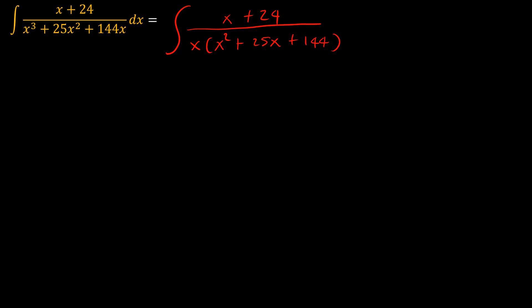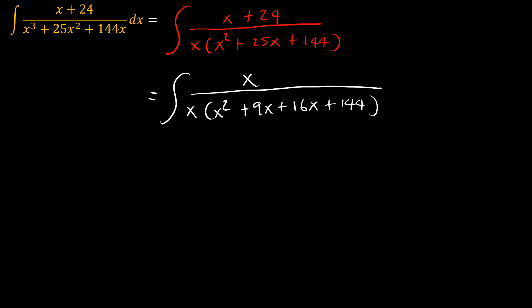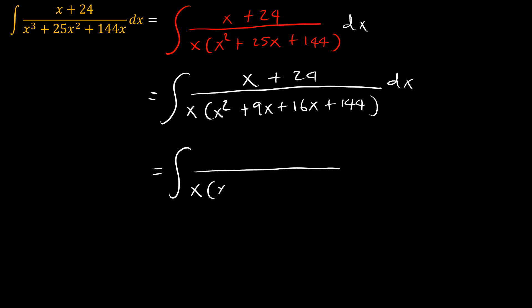The next thing we want to do is factorize. So we have x squared plus 9x plus 16x plus 144. We pull x out to get x times x plus 9, plus 16 times x plus 9.